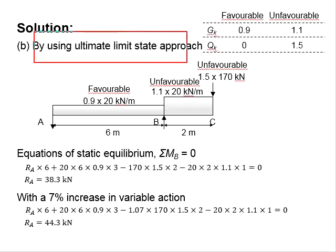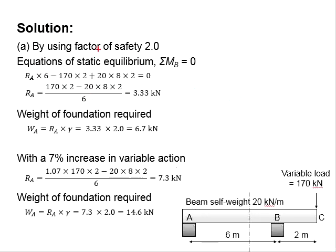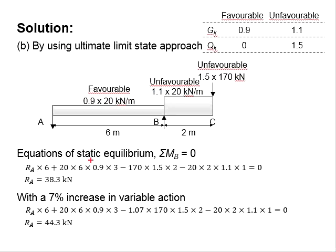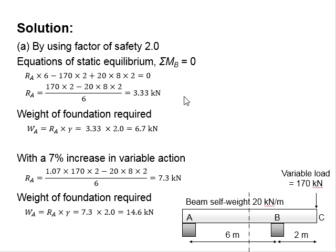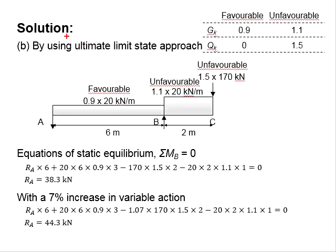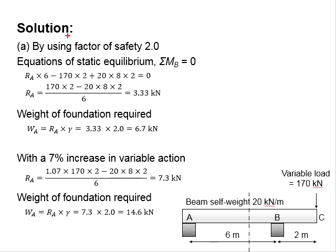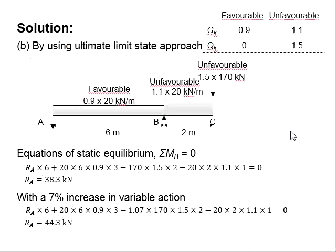Comparing the two methods being used to determine the overturning stability of the structures, the reaction here seems to be relatively large in comparison to the reaction given by the factor of safety 2.0. This means that the ultimate limit state approach is more conservative as compared to the factor of safety 2.0. Through identification of the favorable and unfavorable conditions and the adjusted factor of safety, the most critical situations of the structures can be identified.